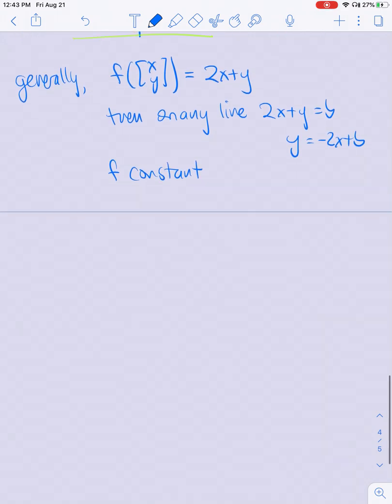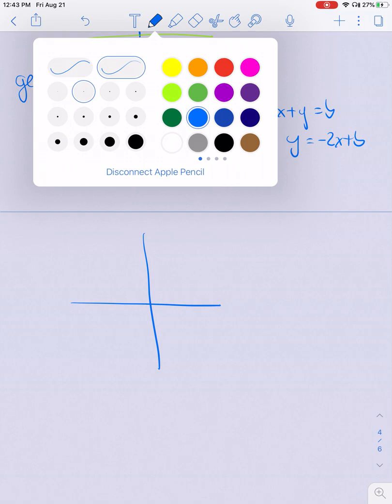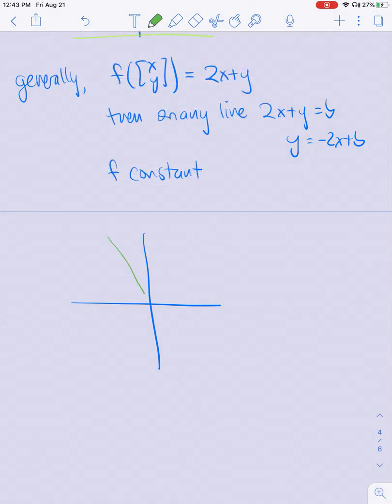So I can draw all these lines. So in this case, these are going to be lines of slope -2 through various points. So here's the b equals 0 line. Maybe here's the b equals 1 line. I could draw the b equals, say this is b equals -1/2. And any two vectors on the same line, F will send to the same value. And so this is a way to visualize what a linear functional does on R².